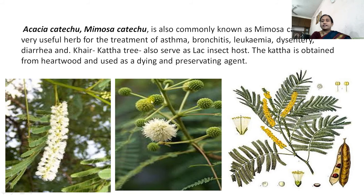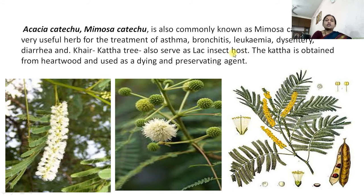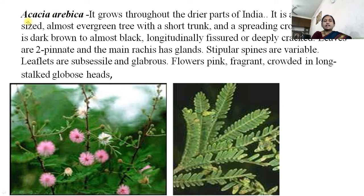Acacia catechu, also known as Mimosa catechu, commonly called khair or kattha tree: from this plant we can exude kattha, which is used in paan when we chew it, and also used as a dye. It is very useful in the treatment of asthma. It also serves as a lac insect host. The kattha is obtained from hardwood and used as a dyeing and preserving agent.